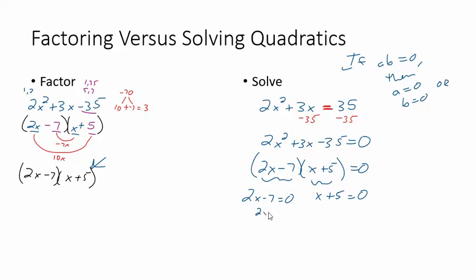And how do I get the first parentheses to come out to be 0? Well, let's see. I'll just solve this. I'll add the 7 over, divide by 2. 7 divided by 2 is 3 and a half. So that's an answer. Here I'd subtract 5 from both sides. That's the other answer. So when I'm solving, I'm finding values of x that make the equation true.